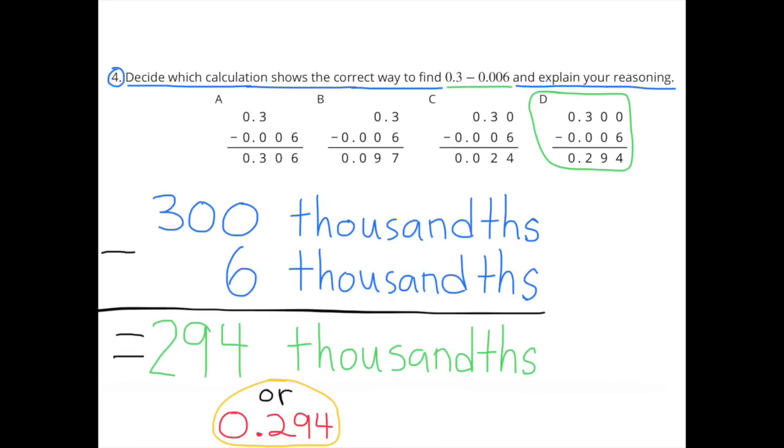Number 4: Decide which calculation shows the correct way to find 0.3 minus 0.006 and explain your reasoning. I selected D because the decimals were lined up properly and the 3 is in the tenths place and the 6 is in the thousandths place. Also, it shows the correct answer because 300 thousandths minus 6 thousandths is 294 thousandths.